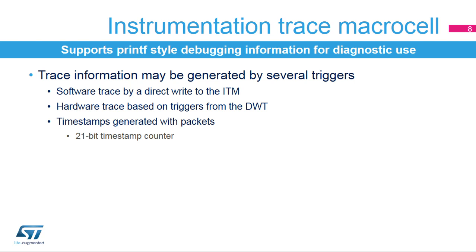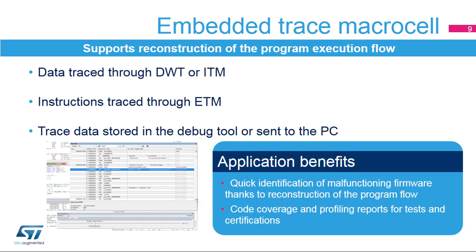The ITM also provides a timestamp from the 21-bit counter. The embedded trace macro cell, or ETM, provides information about the execution flow of the application, by tracing data through the DWT or ITM and tracing instructions through the ETM. This information is then sent to the debugger host for processing, allowing the debugger to completely reconstruct the execution flow.